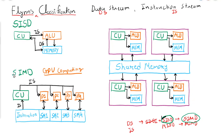Most modern GPUs belong to the SIMD category. When purchasing a GPU from the market — for example, a 4GB graphics card — note that the 4GB refers to the GPU's RAM, not the processor. The GPU has its own separate processor where processing is done. When buying a GPU, also look at the processor configuration, whether it is a single-core or multi-core GPU. That covers SIMD: Single Instruction Stream and Multiple Data Stream.